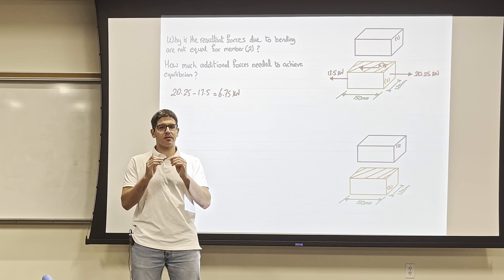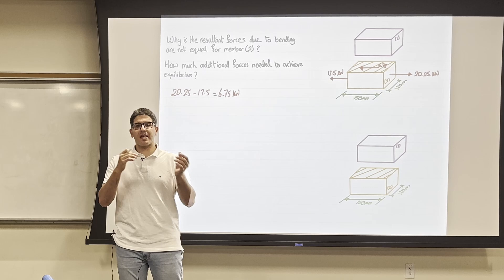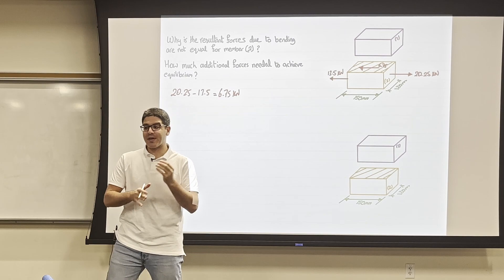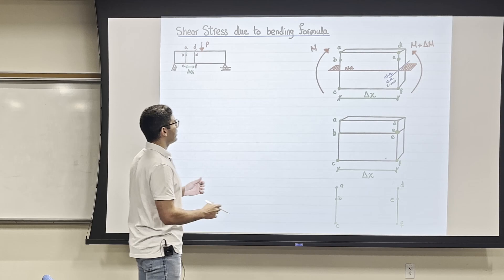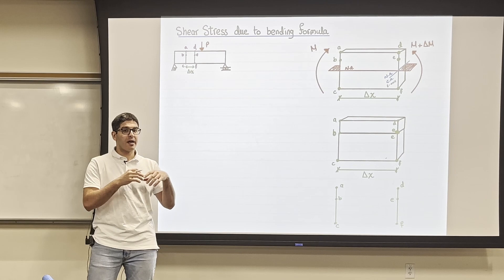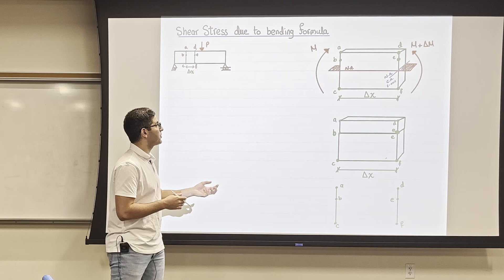To summarize: non-uniform bending causes an imbalance, and this imbalance needs to be resisted through a shear force that is developed internally in the beam. Now let's derive the shear stress equation so we don't need to go through all these manual steps each time.